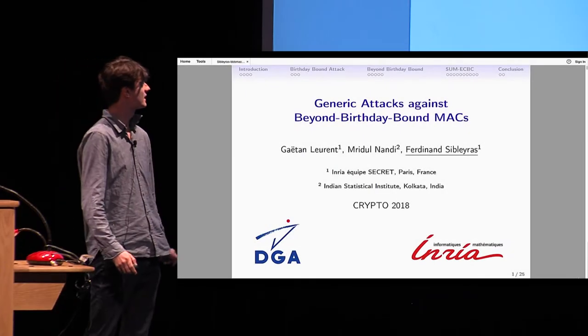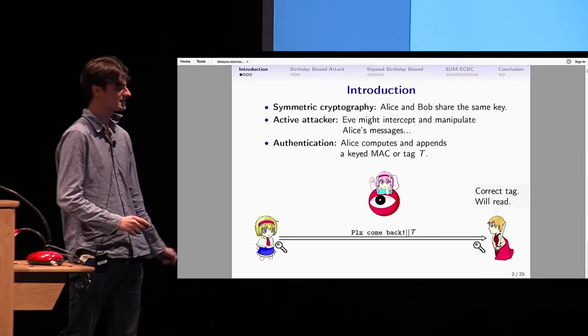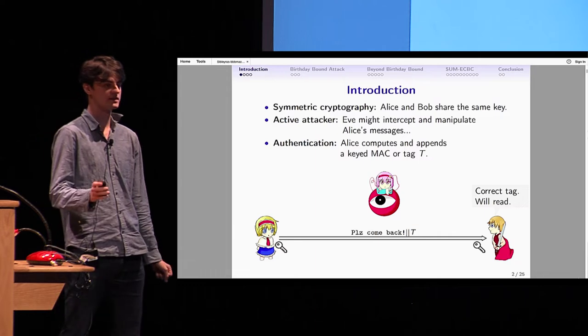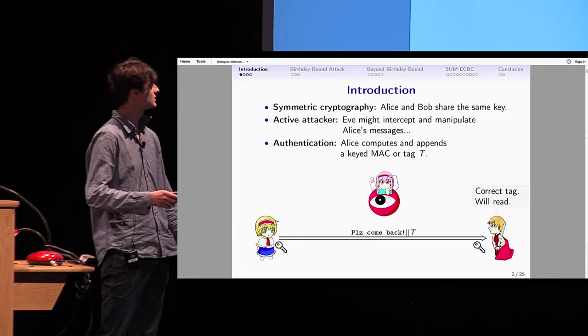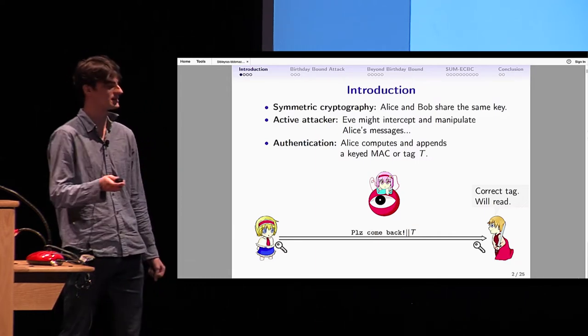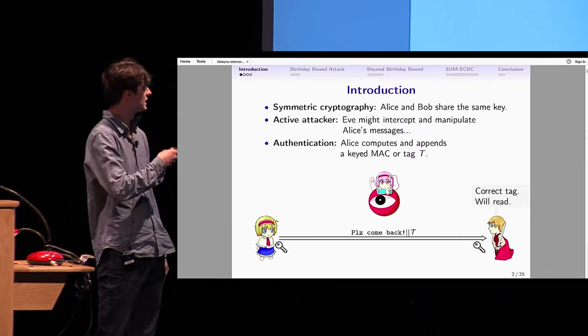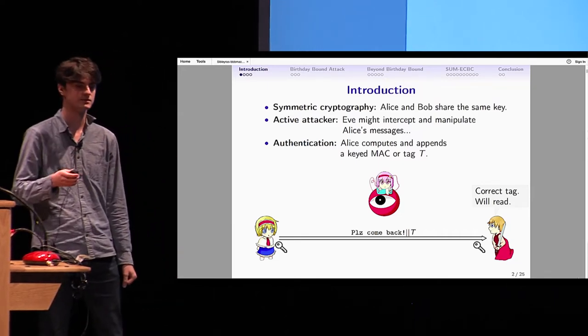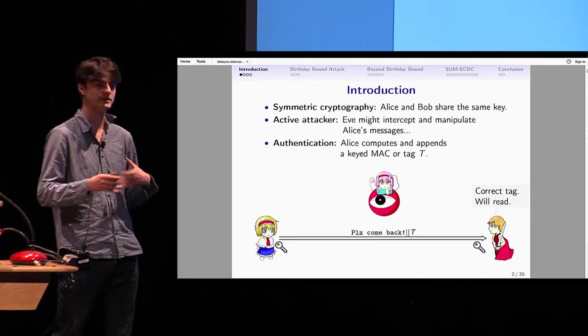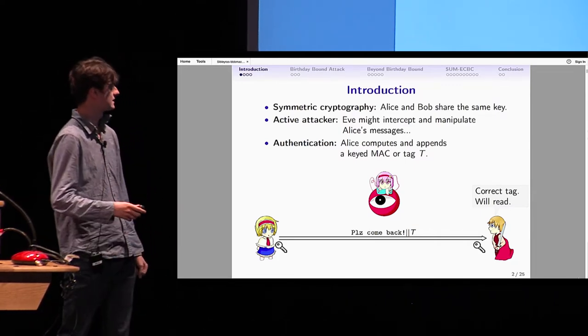Thank you for the introduction. So what is this cryptanalysis about? It's symmetric cryptography. We have Alice and Bob sharing the same key. We have an attacker, Eve, sitting in the middle that will try to intercept and manipulate Alice's messages.